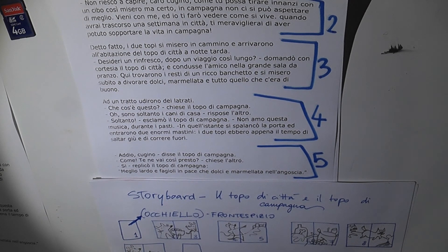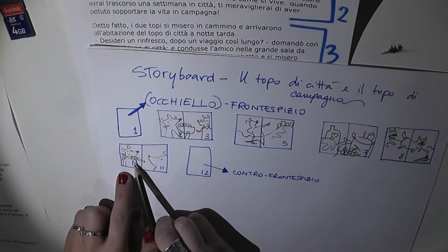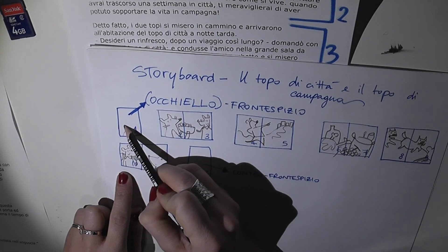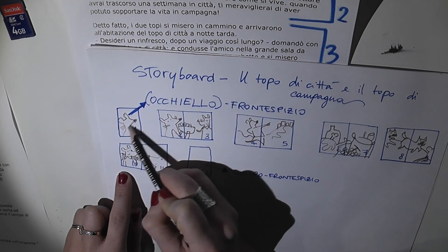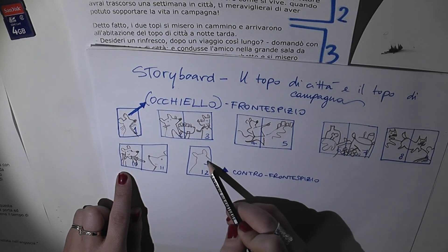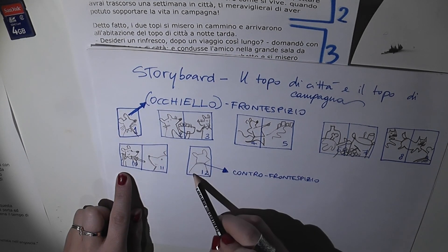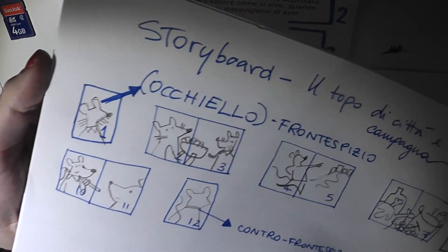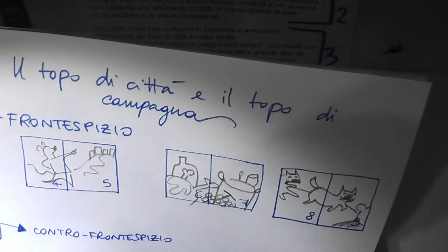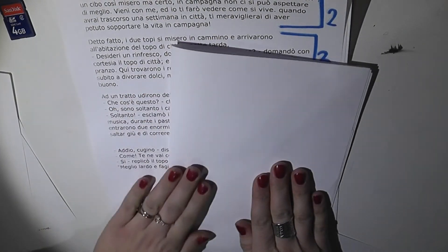Infine nella pagina 12, chiamata anche contro frontespizio, prevedo di disegnare qualcosa di speculare rispetto alla pagina di frontespizio. Quindi come occhiello disegno un topolino di città e nella pagina di contro frontespizio disegno invece il topolino di campagna. Adesso procediamo con un altro elemento, ovvero il menabò.